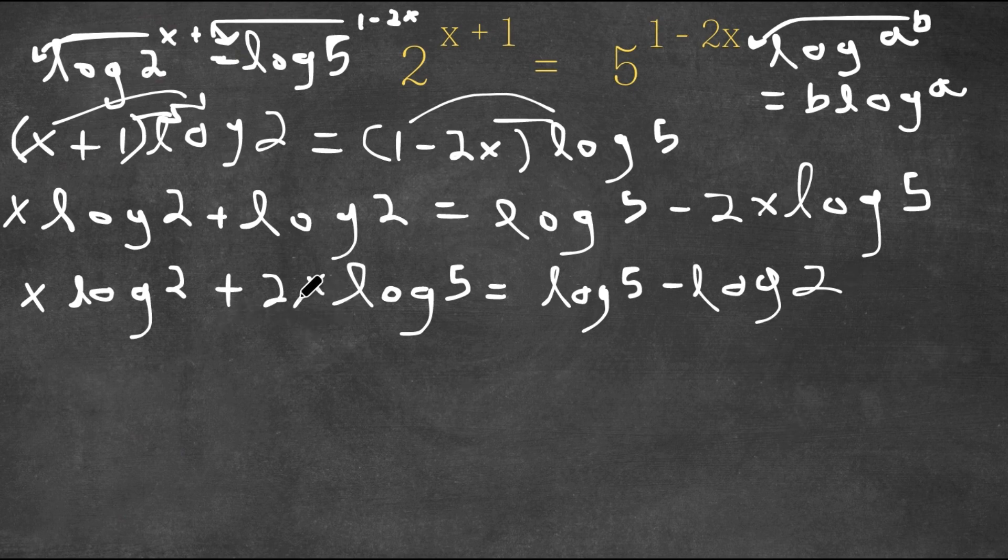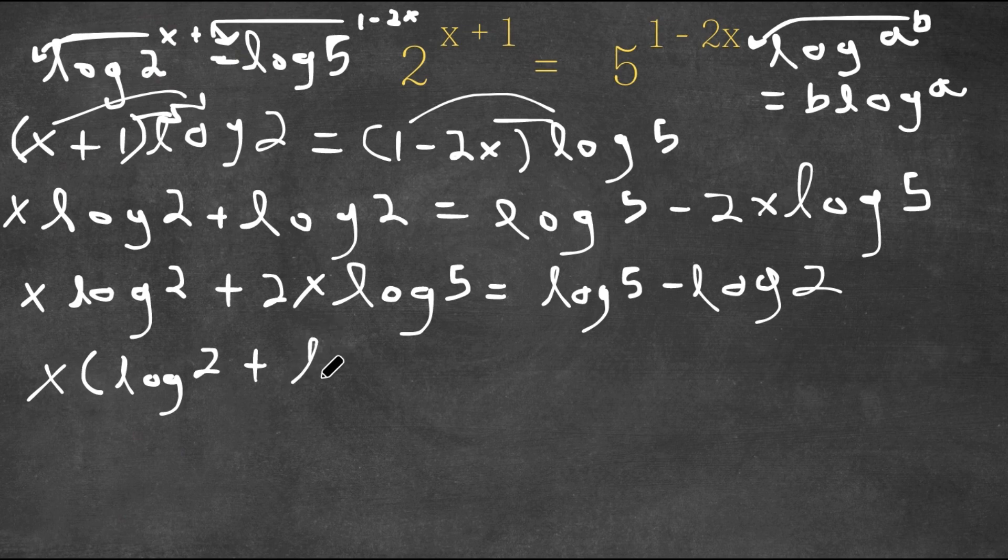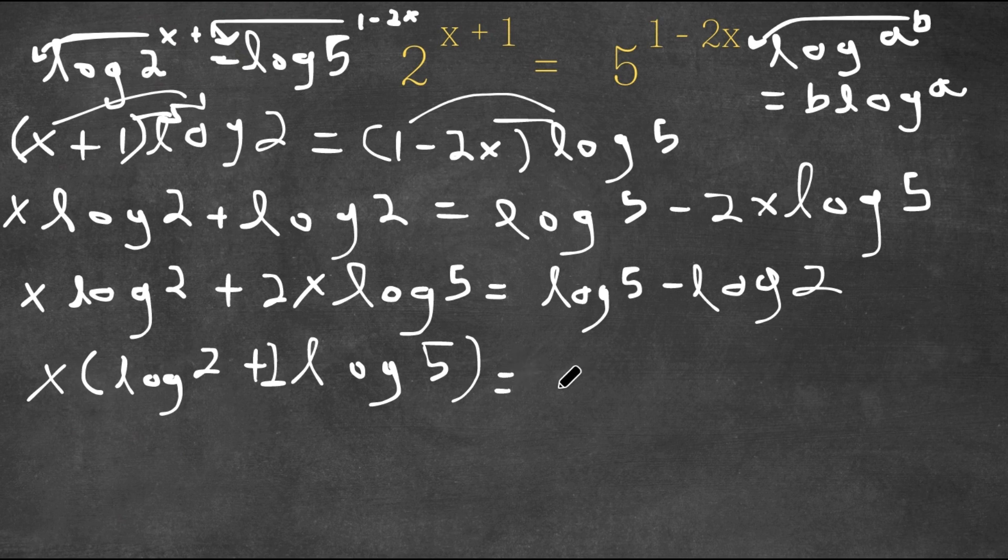Now I'm going to factor out x from our left-hand side. So now I'm going to factor out x times log 2 plus log 5. And now this is equal to log 5 minus log 2.